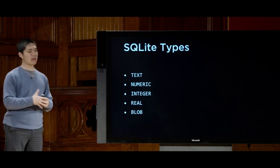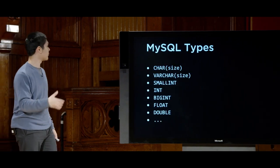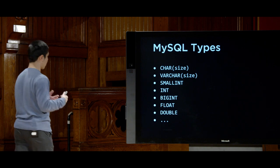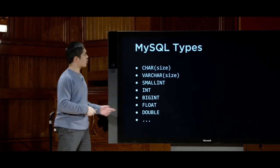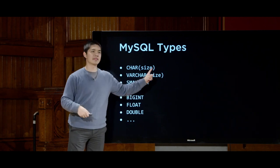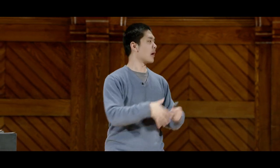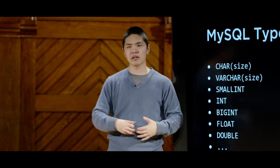Other database management systems have additional types. MySQL, for example, has a much longer list. In addition to a text type for arbitrary length text, MySQL has a char type that takes a size argument — storing exactly that many characters. This can be advantageous when you know your data fits a certain length. For example, a US zip code is always five characters, so you can allocate exactly five characters of space for each zip code in your table.